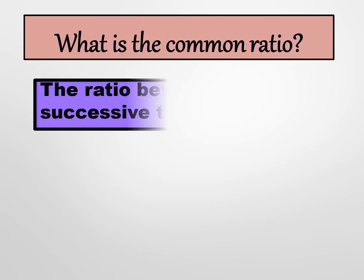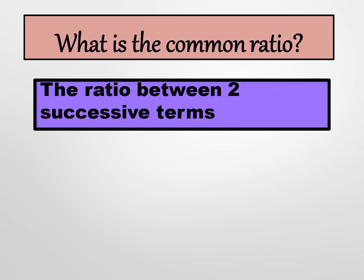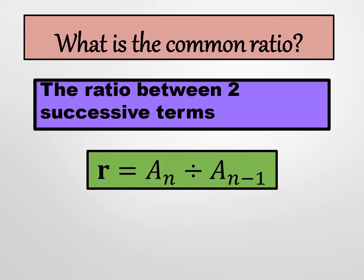The common ratio is the ratio between two successive terms. To get the common ratio in a geometric sequence, we divide the succeeding term by the preceding term: r = a_n divided by a_(n-1), where a_n is the succeeding term and a_(n-1) is the preceding term.